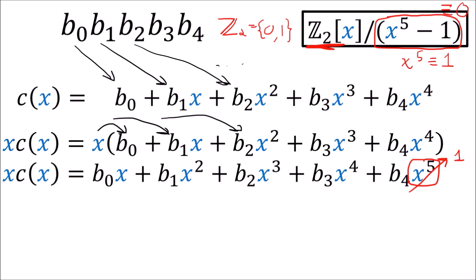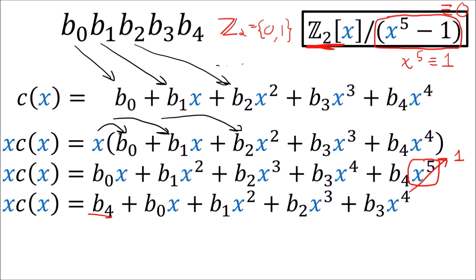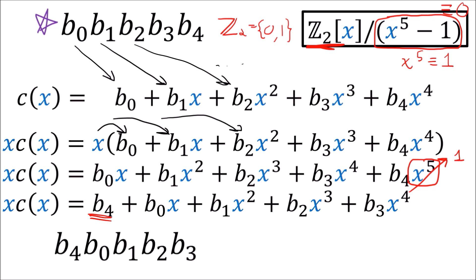Now that b4 has the lowest power of x, we move it to the left side. We get the binary codeword with digits b4, b0, b1, b2, b3 — which is a cyclic shift of the original codeword. We shifted all the bits to the right and brought the last one over to the front.